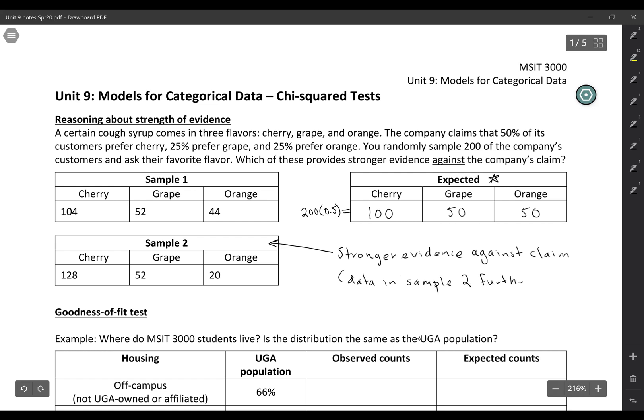Further from the expected data. So if it's further from what we would have expected if the company's claim were true, then that's going to give us stronger evidence against that claim.